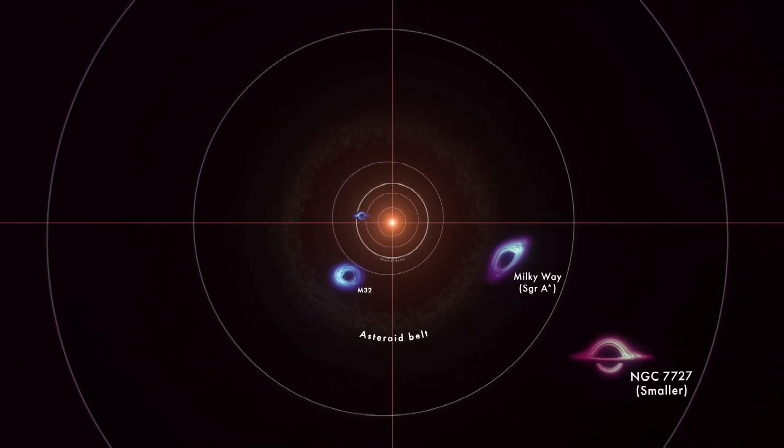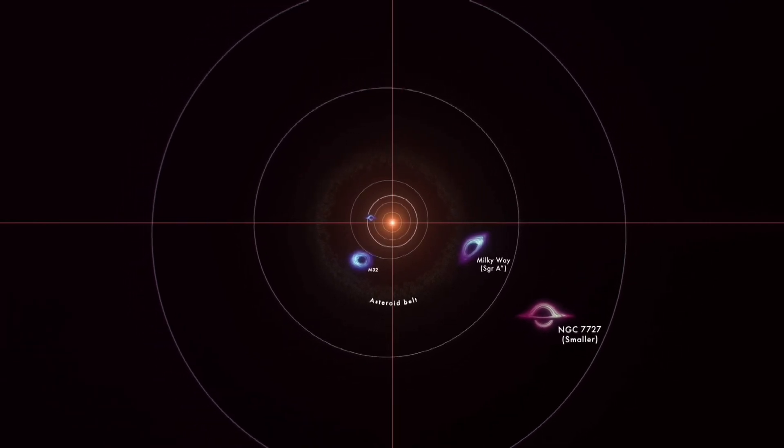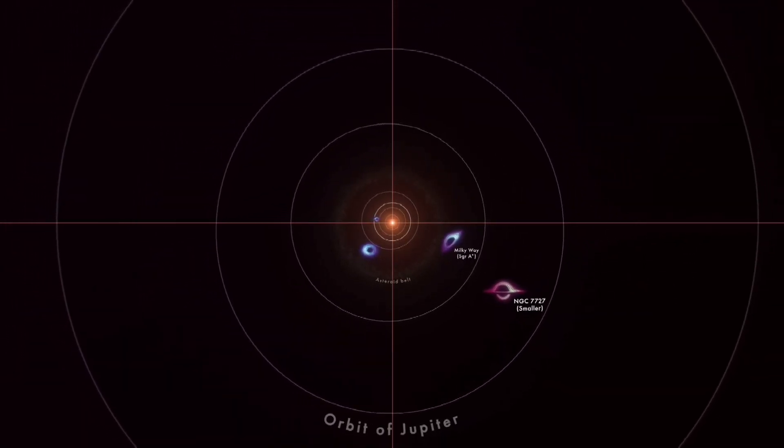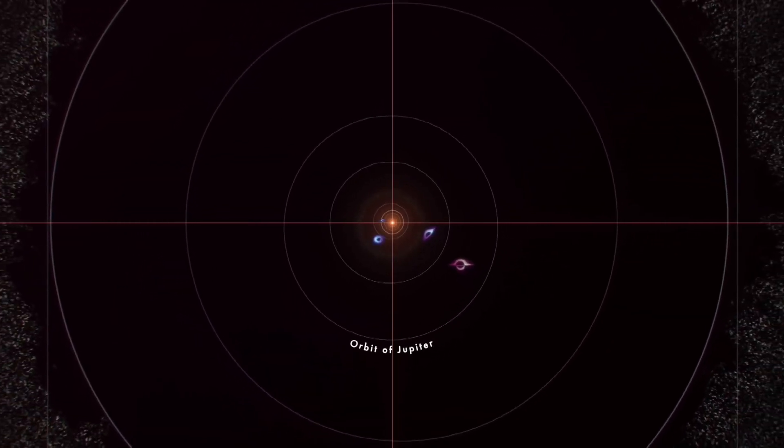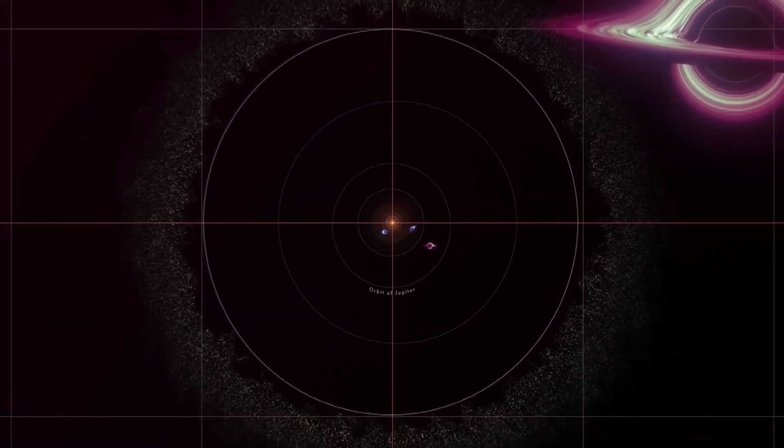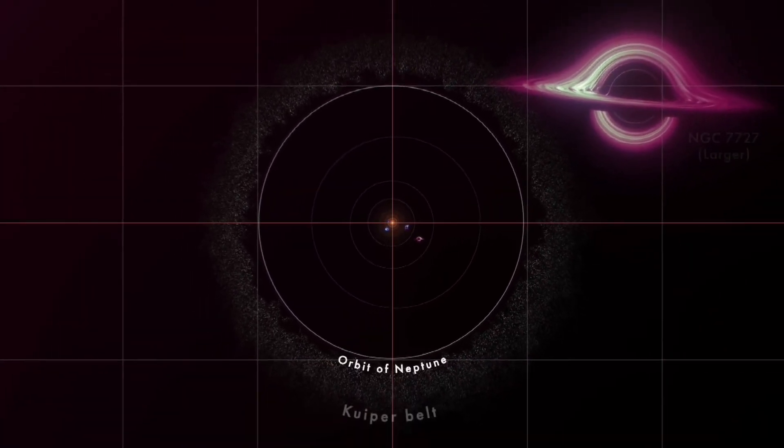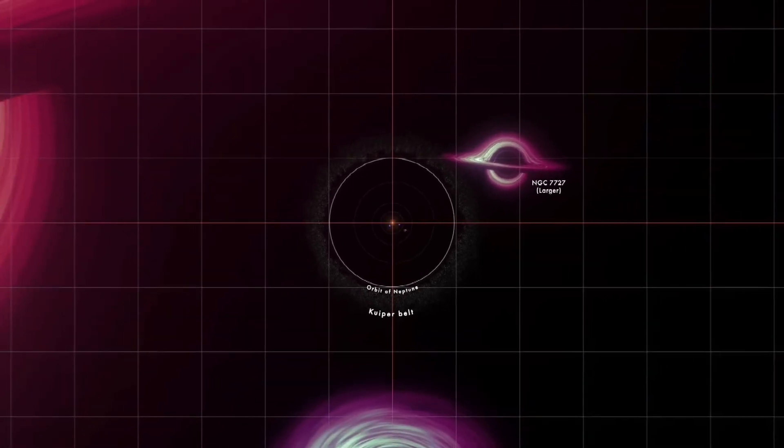In addition, the animation showcases two monstrous black holes present in the NGC 7727 galaxy. One of the black holes has a mass of 6 million suns, while the other is over 150 million suns. They are located about 1,600 light years apart, and experts predict that they will eventually merge within the next 250 million years.